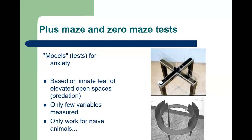One problem is that we measure very few variables. In the elevated zero maze, the same principle applies — percentage of time in the open parts, frequency of entries, maybe head dips — at most three or four variables. That makes it very easy to fall into the trap of thinking in a single dimension: that the extremes of behavior in the plus maze or zero maze range from very anxious to not anxious at all, and nothing else is happening. You would be wrong.